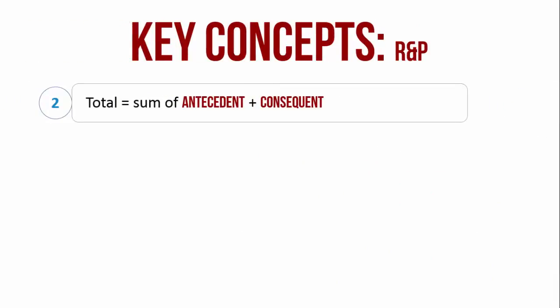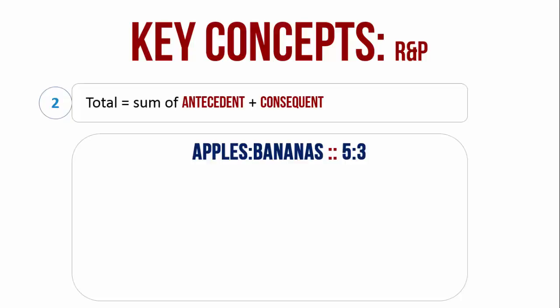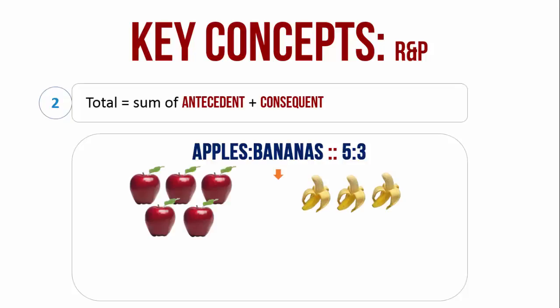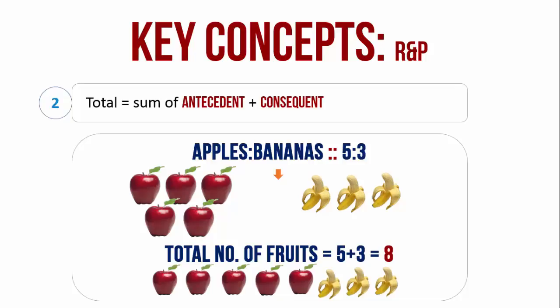The total quantity is equal to the sum of the antecedent and the consequent. For example, if the ratio of apples to bananas is as 5 is to 3, the total number of fruits is 5 plus 3 is 8.